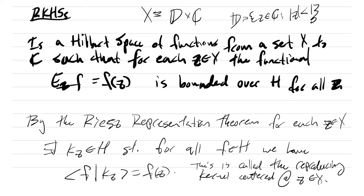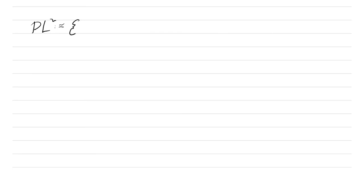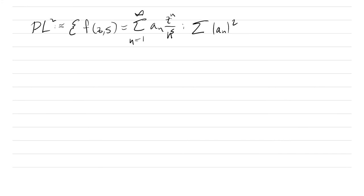If you want more information on reproducing kernel Hilbert spaces, I have a lecture already put together and I'll put a link here. We are looking at the polylogarithmic Hardy space, PL2. It is a function of two variables: Z in D and S in C. It is the set of all functions that look like the sum from n=1 to infinity of a_n times z^n over n^s, where the sum of |a_n|² is finite. The index starts at one because one divided by zero is undefined.